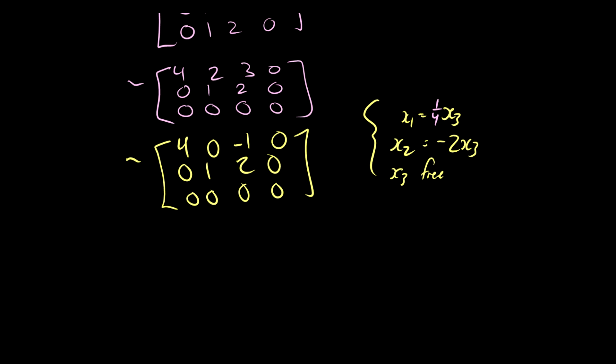So when we write a solution, remember we write it as a vector x. And this has x1, x2, x3 as their solution. So let's take a look. x1 is equal to 1/4 x3, x2 is equal to negative 2 times x3, and x3 is just equal to x3.